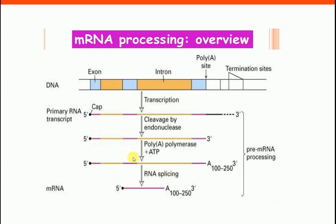After adding the 5' cap and poly-A tail, RNA splicing occurs. The non-coding sequences called introns must be removed, and this is carried out by a complex called the spliceosome. The introns are removed and the exons — the coding sequences — are ligated together to produce the final messenger RNA. In prokaryotes, no such processing occurs.